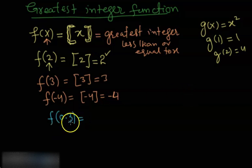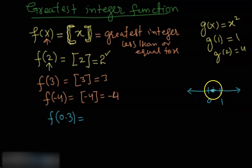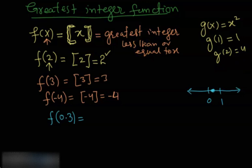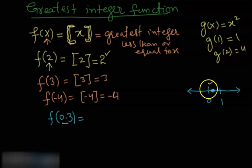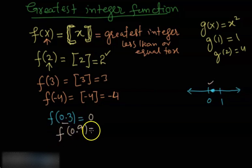To find f(0.3), look at where 0.3 is on the number line — between 0 and 1. What you have to do is pick the integer which is on the left of the decimal number 0.3. The first integer on the left side is 0, so f(0.3) = 0. Similarly, f(0.9) will again give 0.